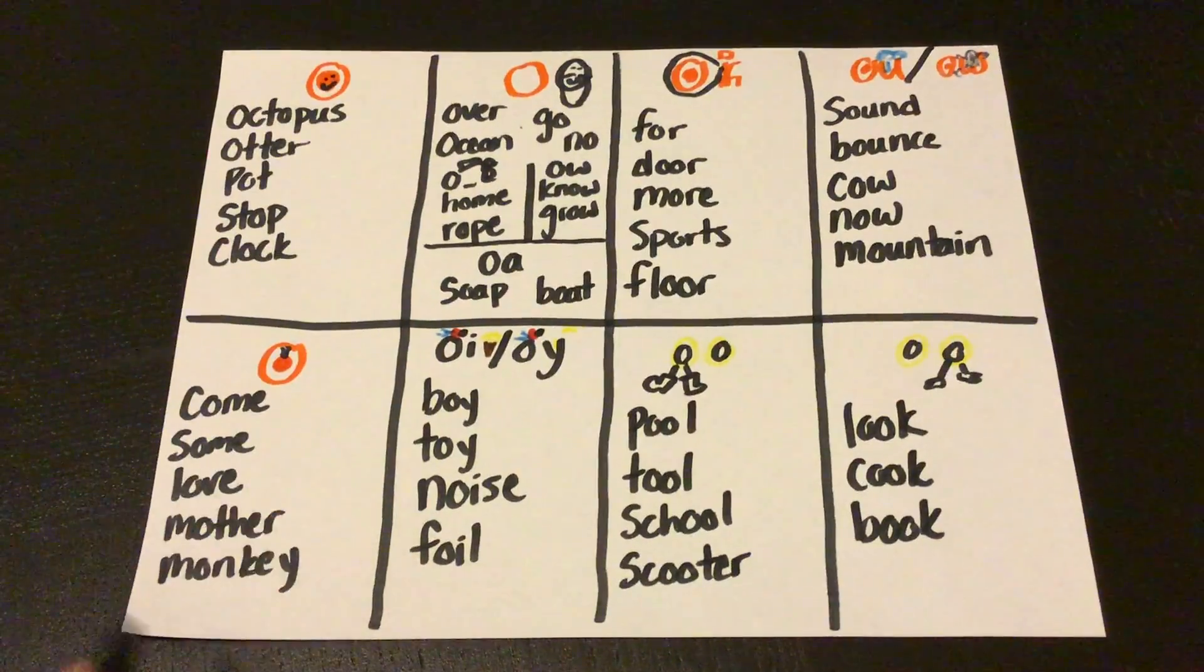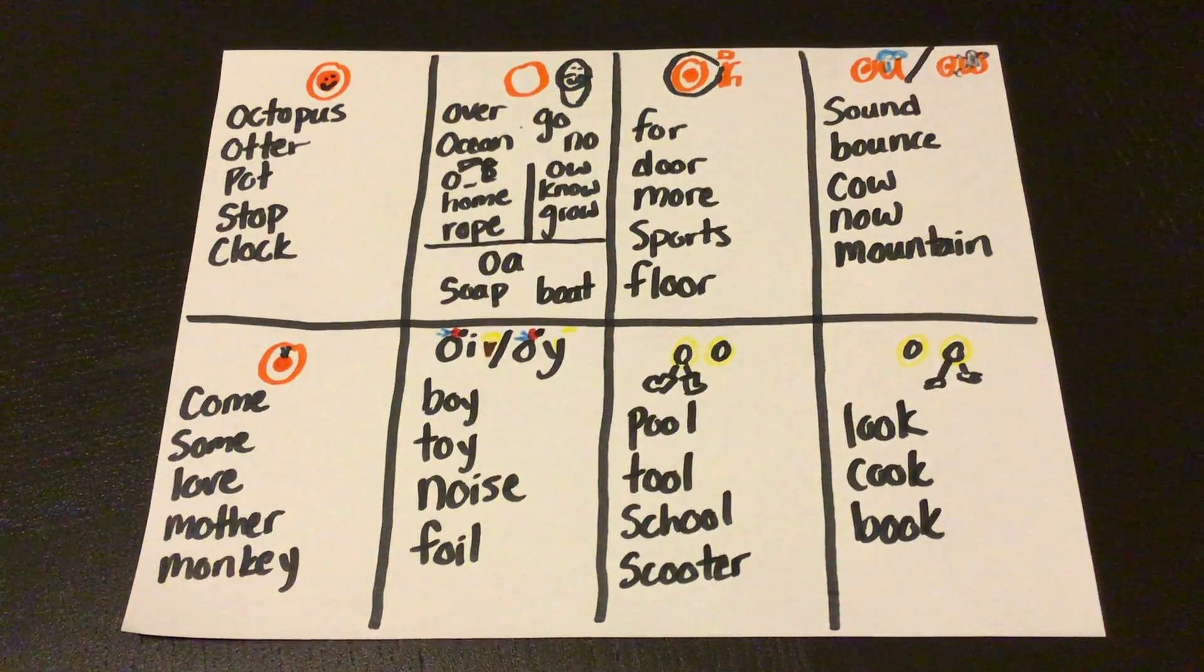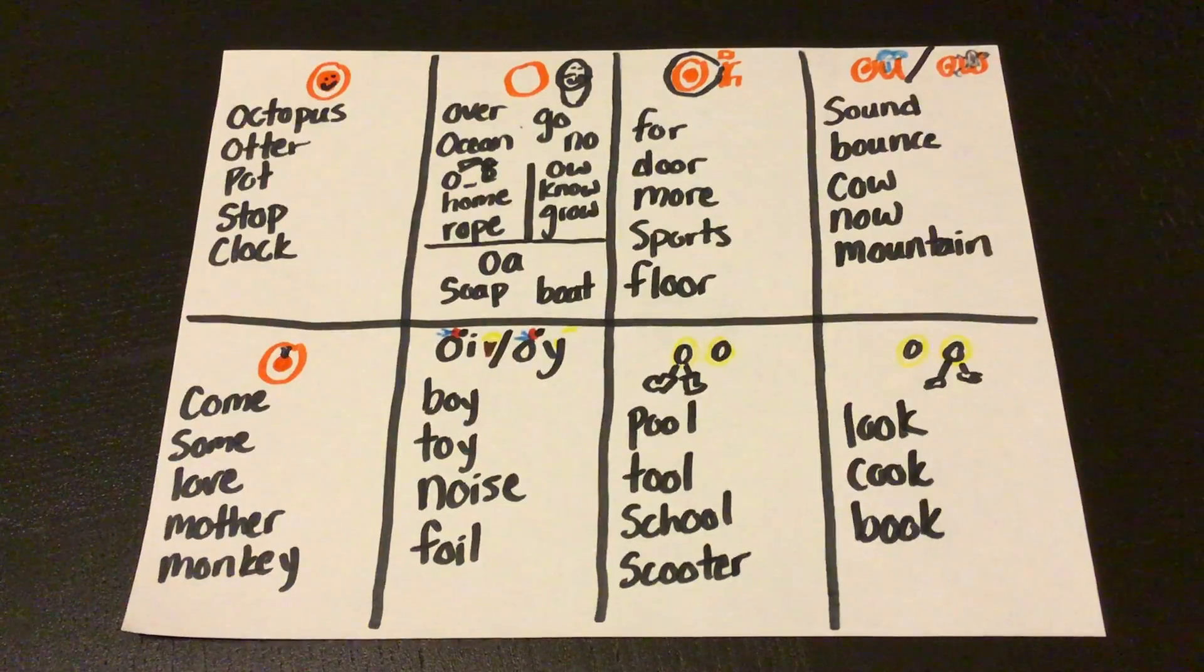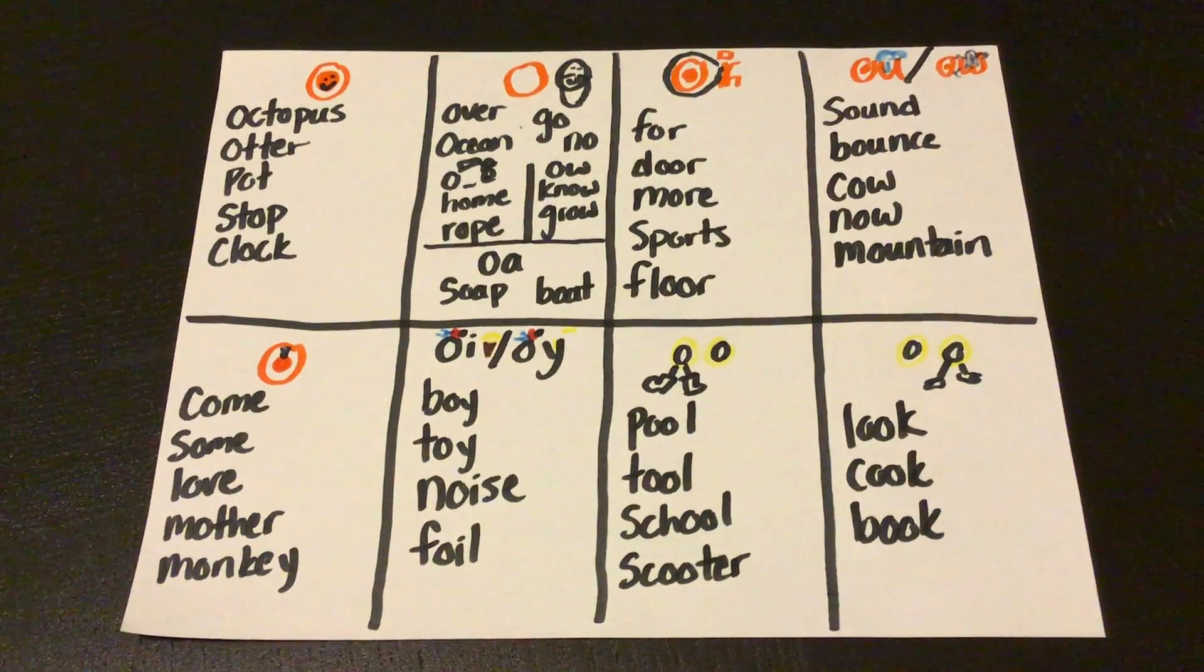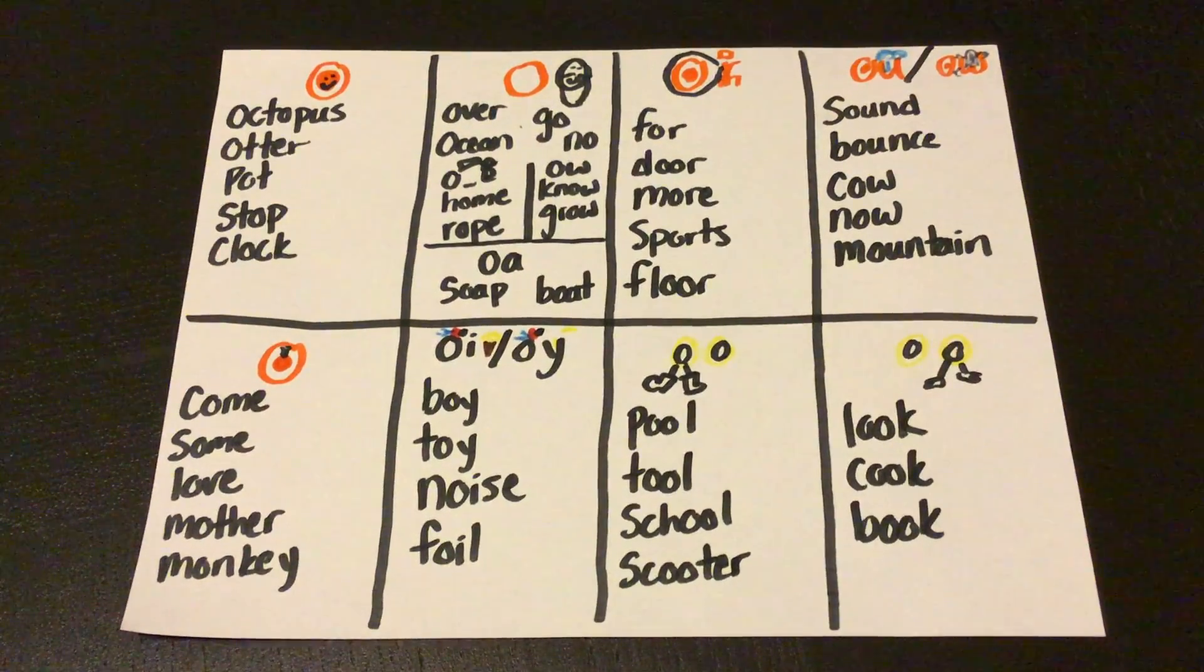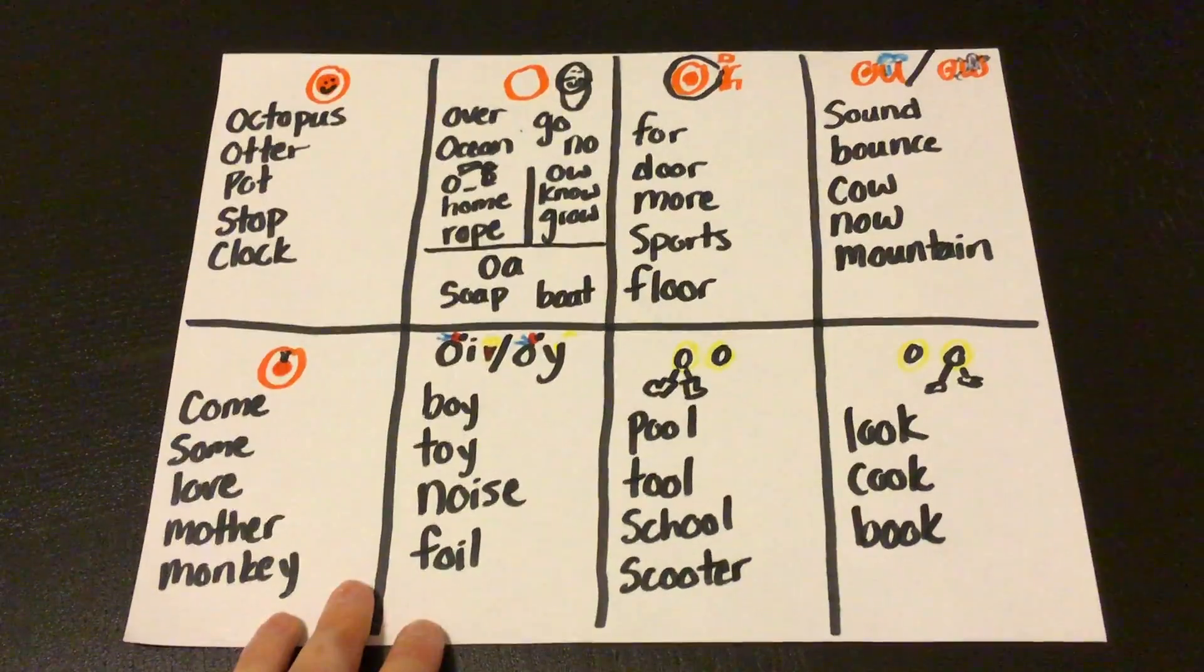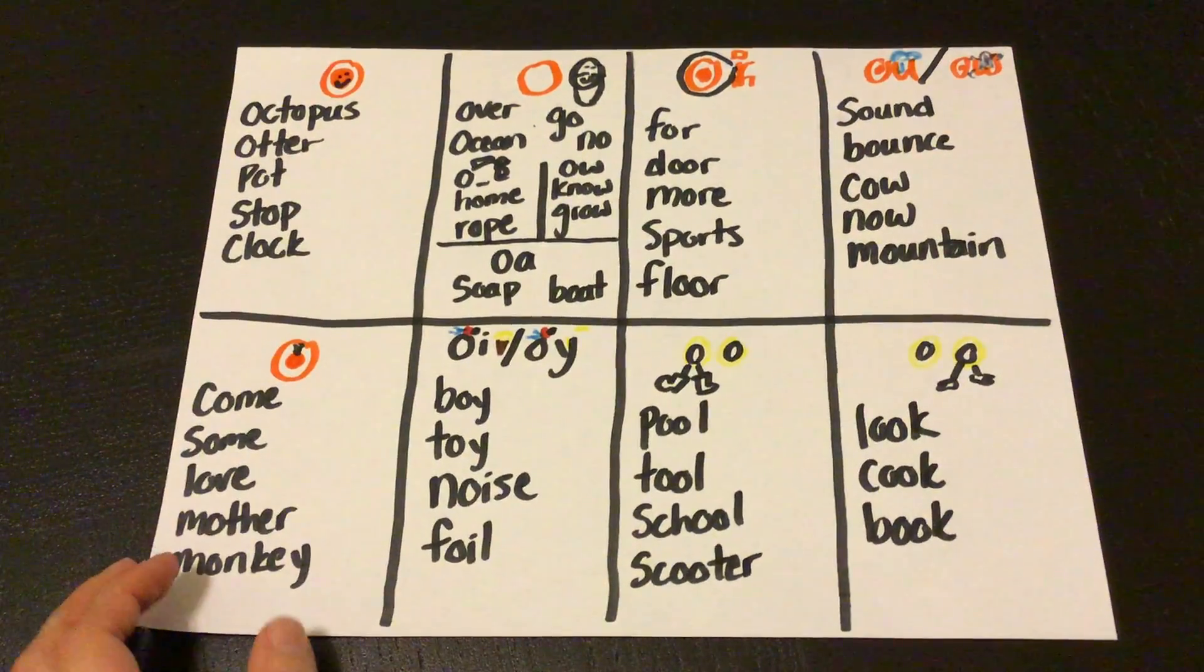So be looking for these O words in your books this week. I know there's so many sounds that the letter O can make. I wish it wasn't that way, but I trust, I know that you guys can do it. Look for these words this week. Find some, write them down, and send me a picture of your chart when you're done. Good luck!